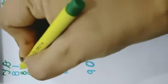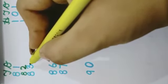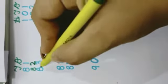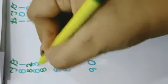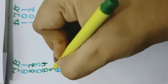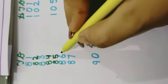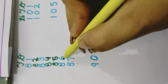What comes after 81? 8, 2: 82. What comes after 82? 83. What comes after 83? 8, 4: 84. What comes after 84? 8, 5: 85. What comes after 85? 8, 6: 86.